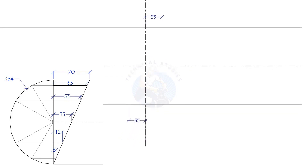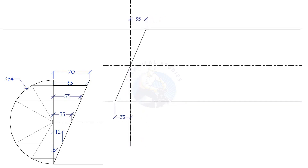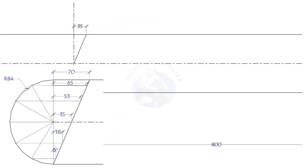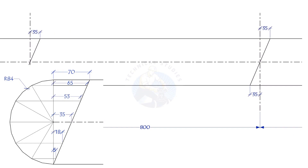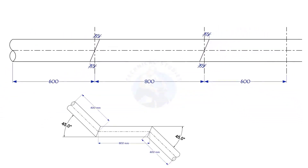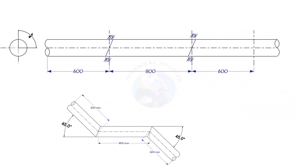Or, divide the pipe into 12 parts, draw a layout as shown, and mark. Repeat the process. The direction of the marking shall be the same.